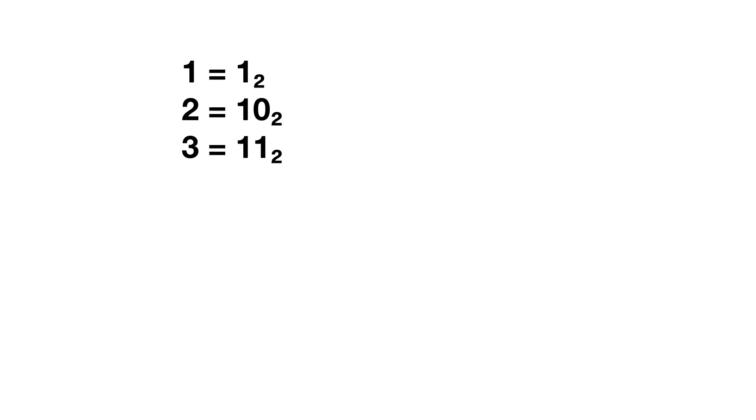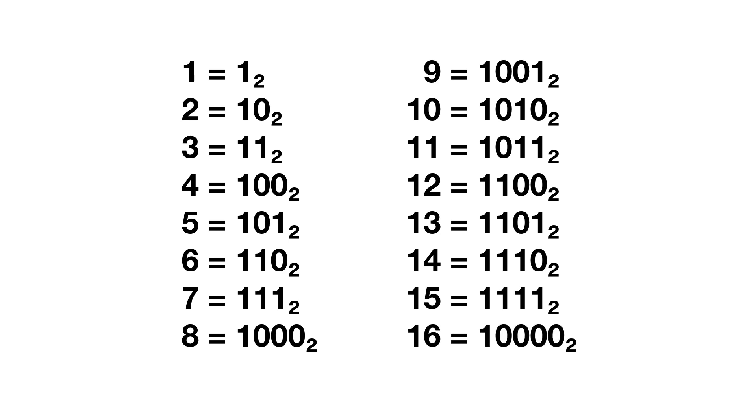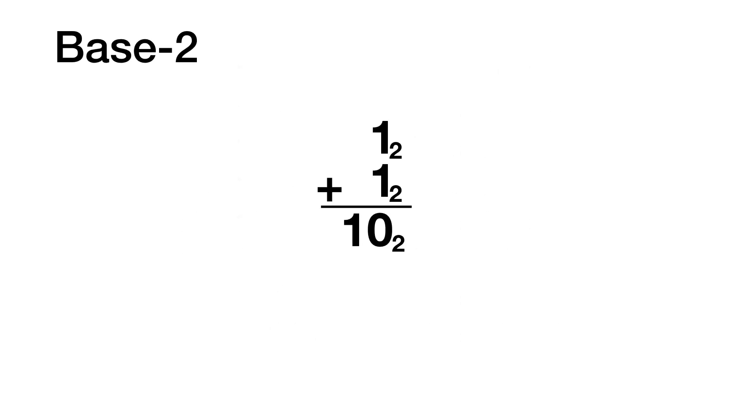Here are the numbers 1 through 16 in binary. The numbers require a lot more space to write down, but they can be written using only 0s and 1s. Let's try some basic arithmetic. The key point to note is that 1 plus 1 is 2, and the number 2 written in binary is 10.